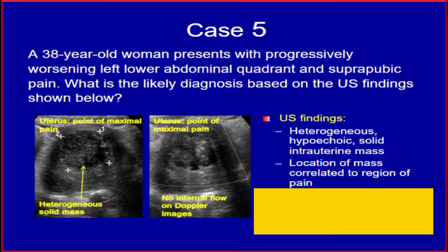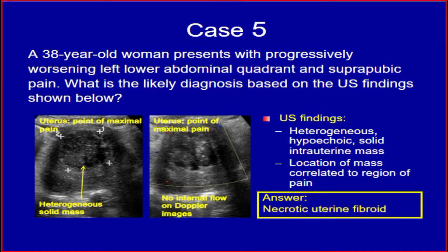Case 5. A 38-year-old woman presents with progressively worsening left lower abdominal quadrant and suprapubic pain. Ultrasound findings: heterogeneous hypoechoic solid extrauterine mass; the location of the mass correlated to the region of pain. The answer is necrotic uterine fibroid.